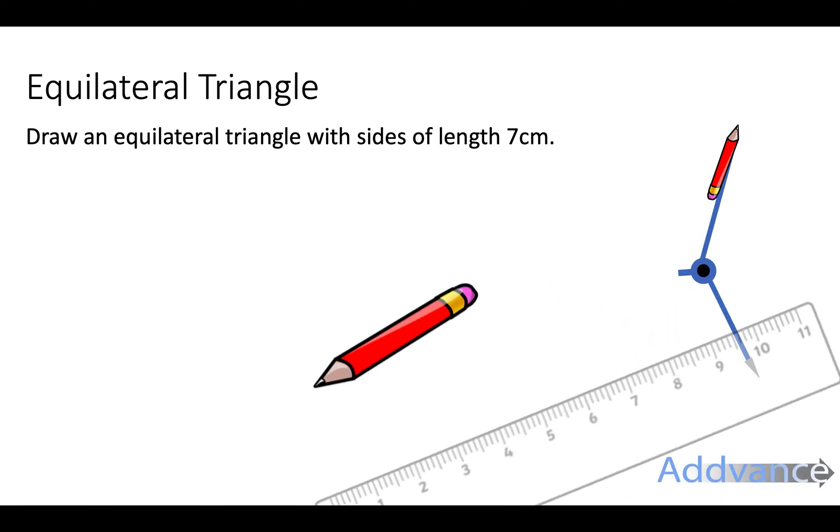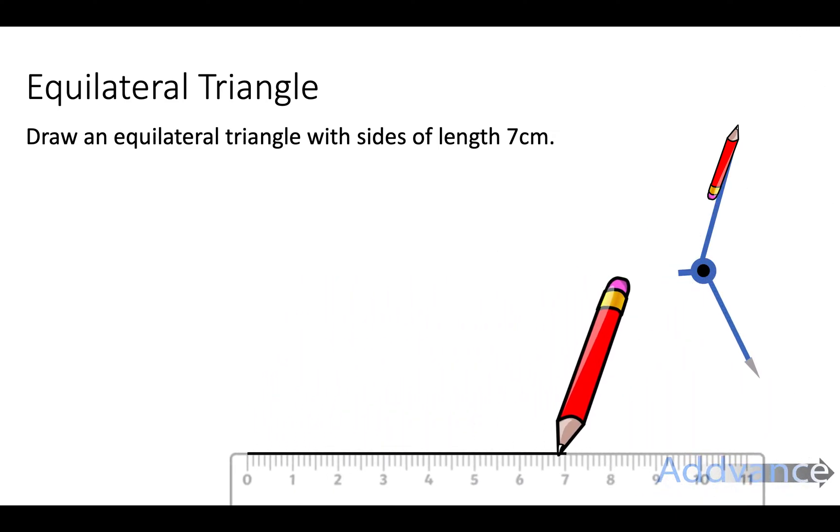So we start by drawing a line of length 7cm like this with a ruler. Remember that when we're doing constructions, we take our time, we do it nice and accurately, and we do it smoothly. We don't scribble.